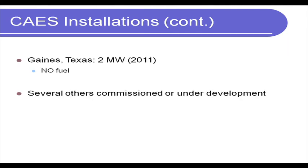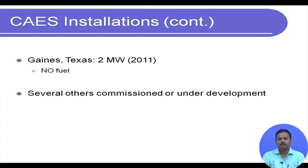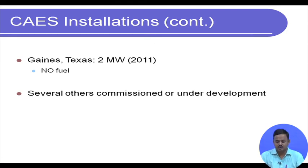A plant in Texas commissioned in 2011 is a small 2 MW plant, but it uses no fuel — making it the first adiabatic CAES installation. Several other installations have been commissioned or are under development. While CAES is not as widespread as pumped hydro, it remains an attractive and innovative niche method for storing energy in the form of compressed air.